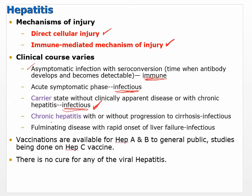With chronic hepatitis, the symptoms are there, there's damage, and there's continuous inflammation. If it's asymptomatic or in the carrier state, you won't see the inflammation, but with chronic hepatitis the inflammation is there, and it may or may not progress to cirrhosis. Fulminating disease with rapid onset of liver failure is infectious — we might think of that as a toxin like Tylenol, which can cause rapid onset of liver failure.